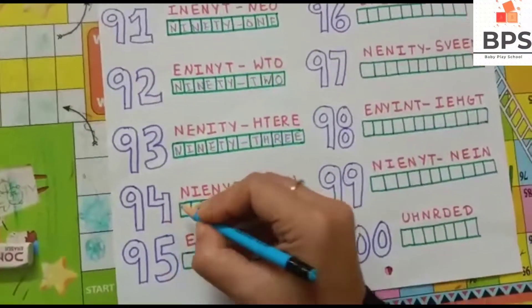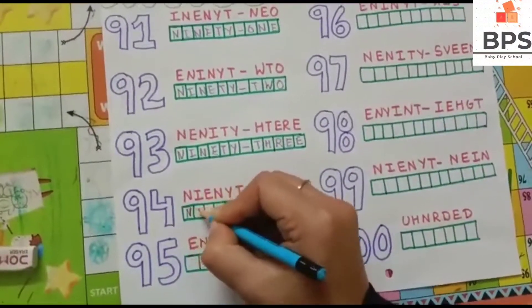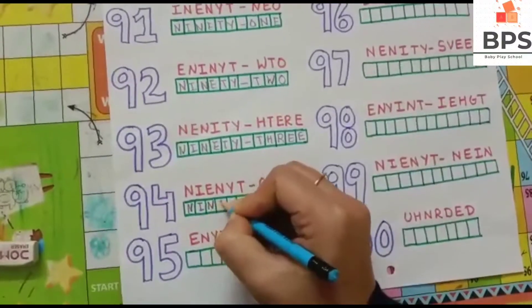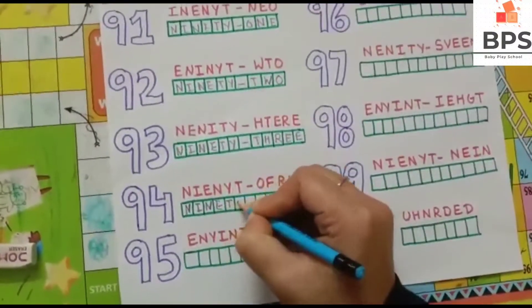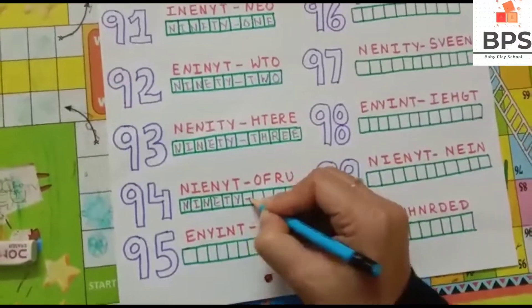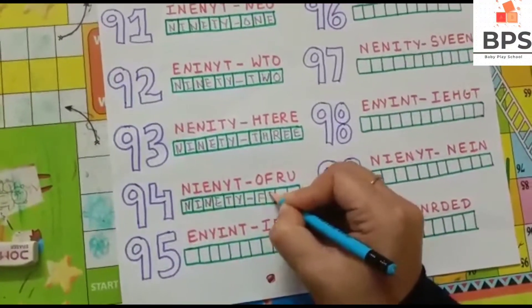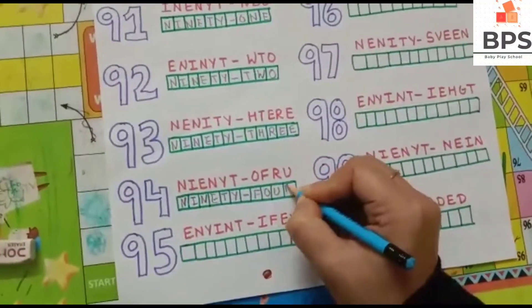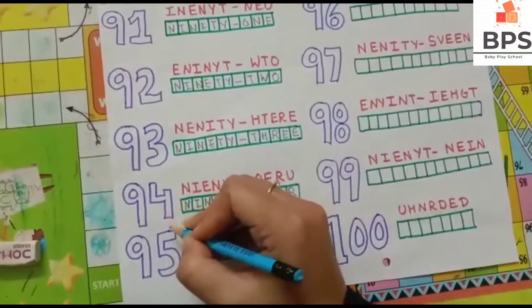9, 4, 94 — N-I-N-E-T-Y, 90, N-I-N-E-T-Y, 90, F-O-U-R, 4, so 94.